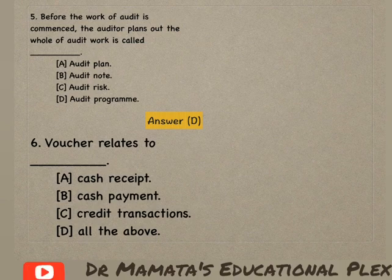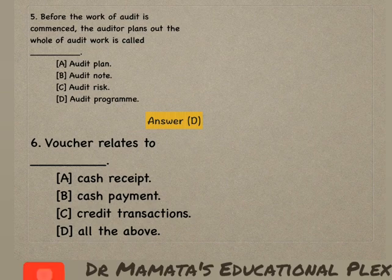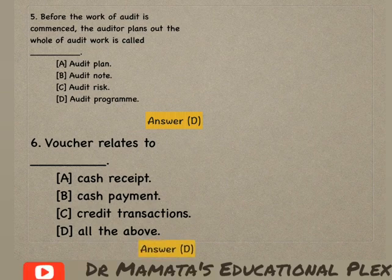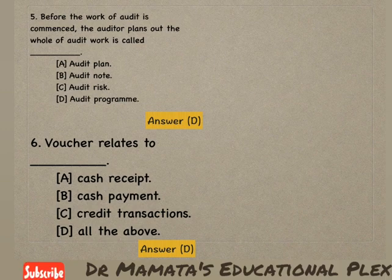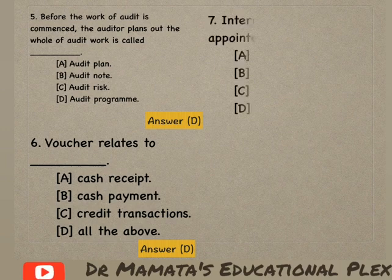Next: Voucher relates to — cash receipt, cash payment, credit transactions, or all the above? Vouchers mein in saari cheezon ko dekha jaata hai — cash receipt ke, cash payment ke, credit transaction ke voucher bante hain. So option D, all the above, is the correct answer.